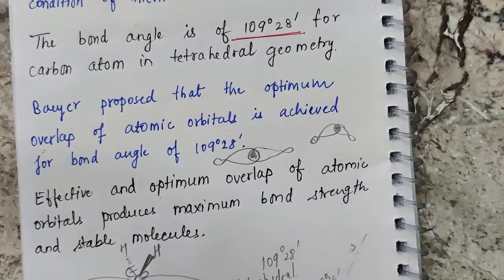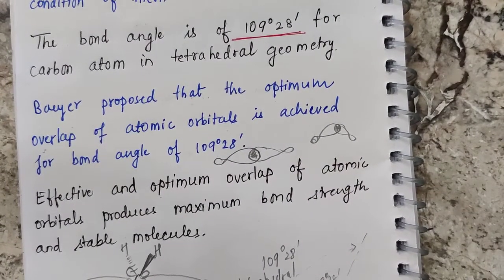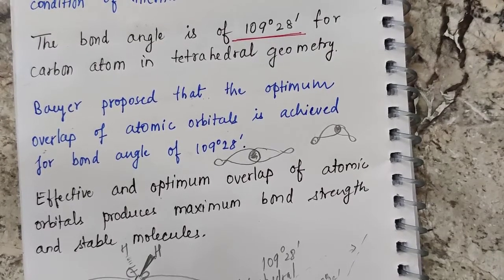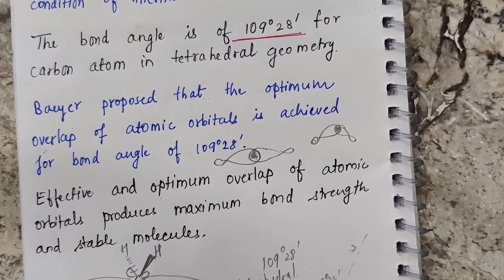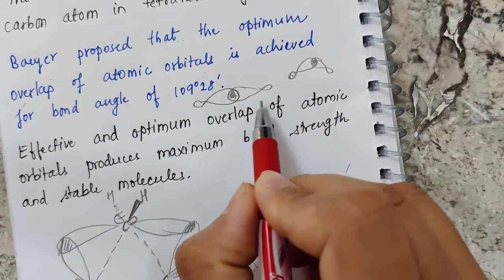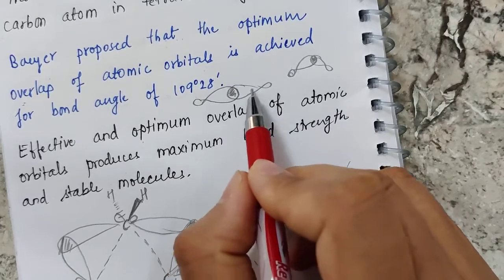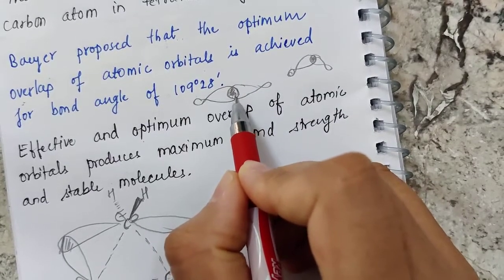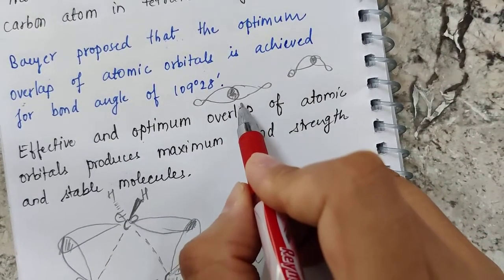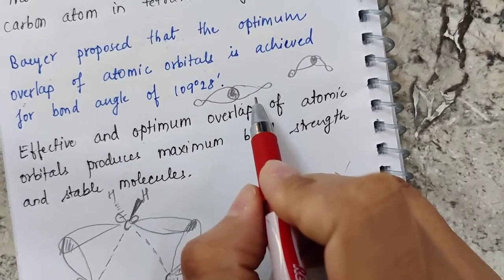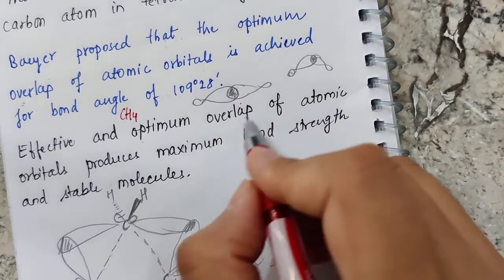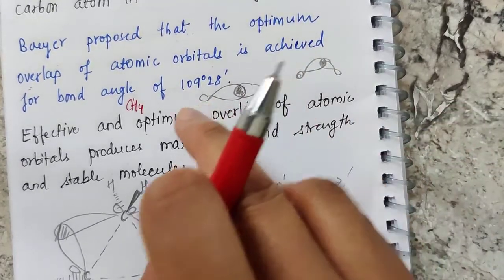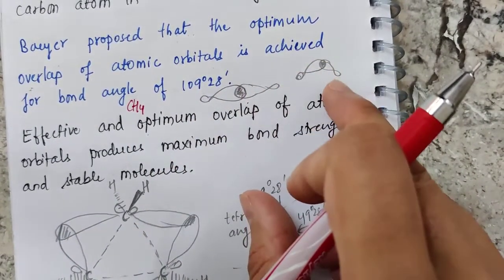He proposed that in order to obtain maximum overlap of atomic orbitals, the bond angle should be 109° 28'. If you look at an sp3 hybridized carbon, the overlap is maximum when it is head-on overlap, and this only happens in the case of a perfectly tetrahedral structure — for example, in methane.